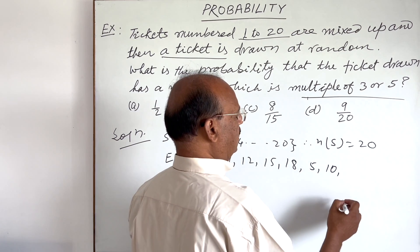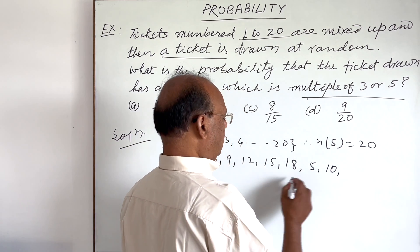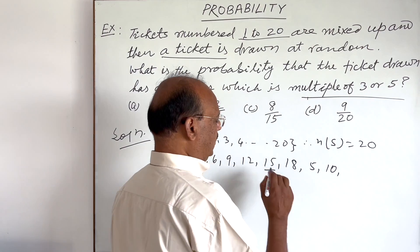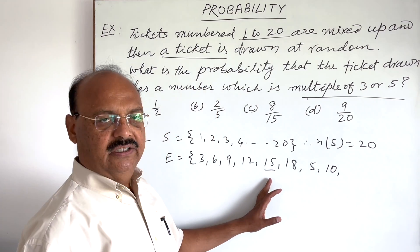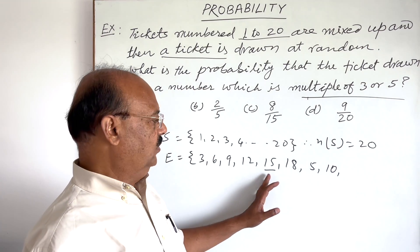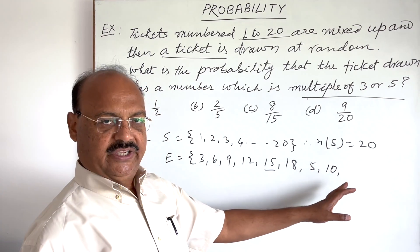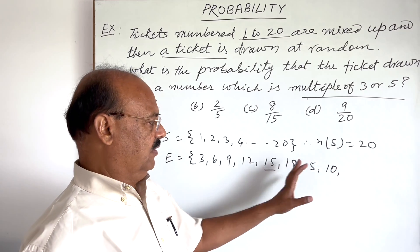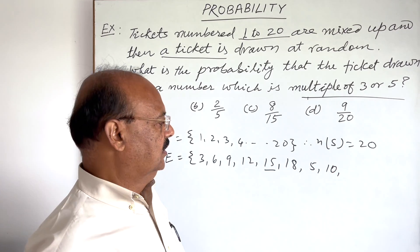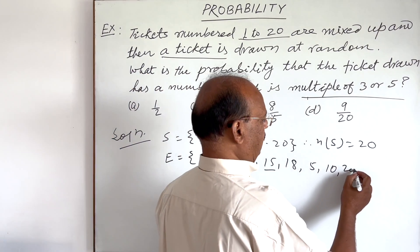Multiples of 5 from 1 to 20 are: 5, 10, 15 — but we have already written 15, so there is no need to repeat it again. So then 20. We will not repeat the number 15 again.